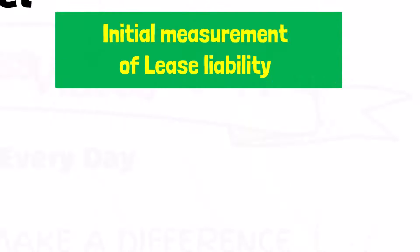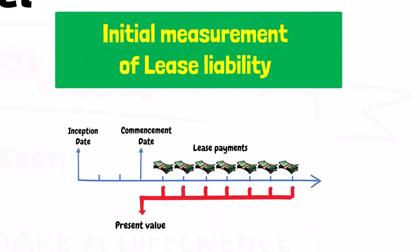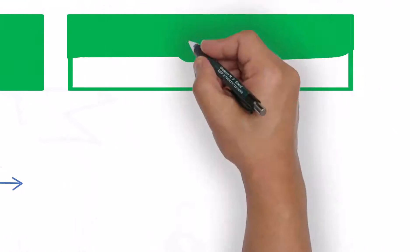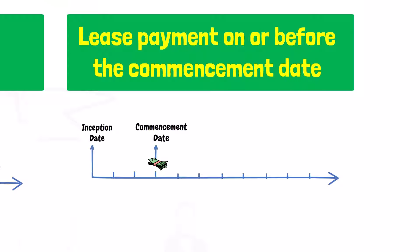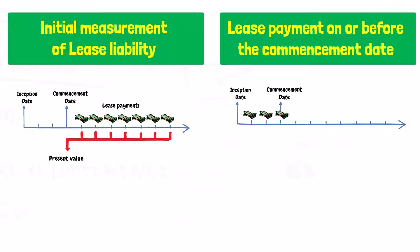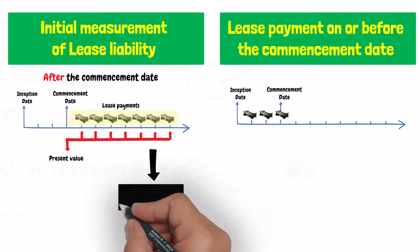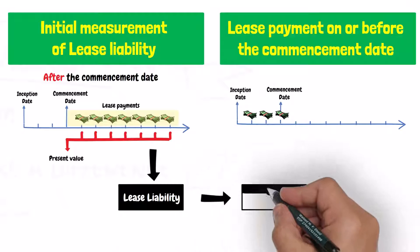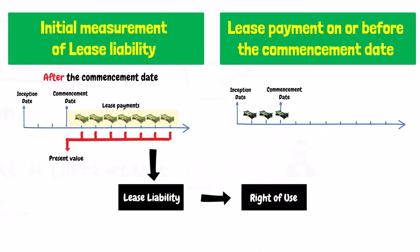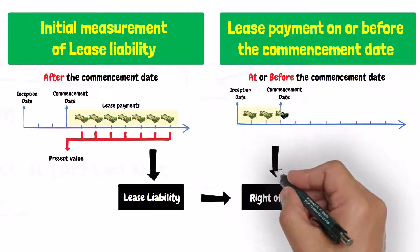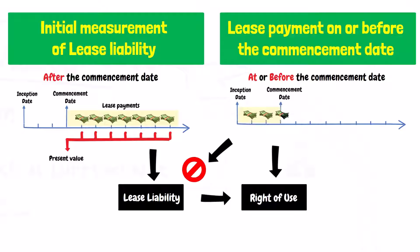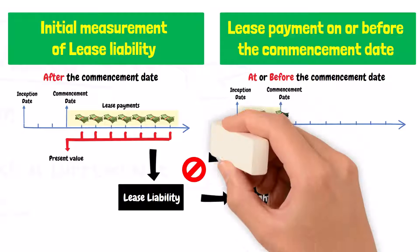The first component is the initial measurement of the lease liability, which is the present value of the lease payments that are paid after the commencement date. The second component is the lease payments that are paid at or before the commencement date. So, the lease payments are either payments made after the commencement date — included in the measurement of the lease liability and in turn the right of use asset — or payments made at or before the commencement date, included only in the measurement of the right of use asset. They are not included in the lease liability because they were not paid after the commencement date.